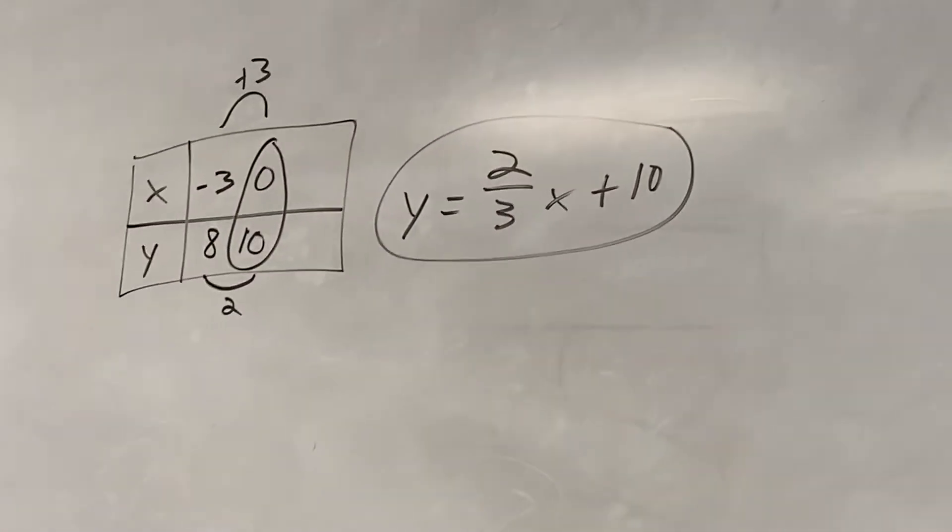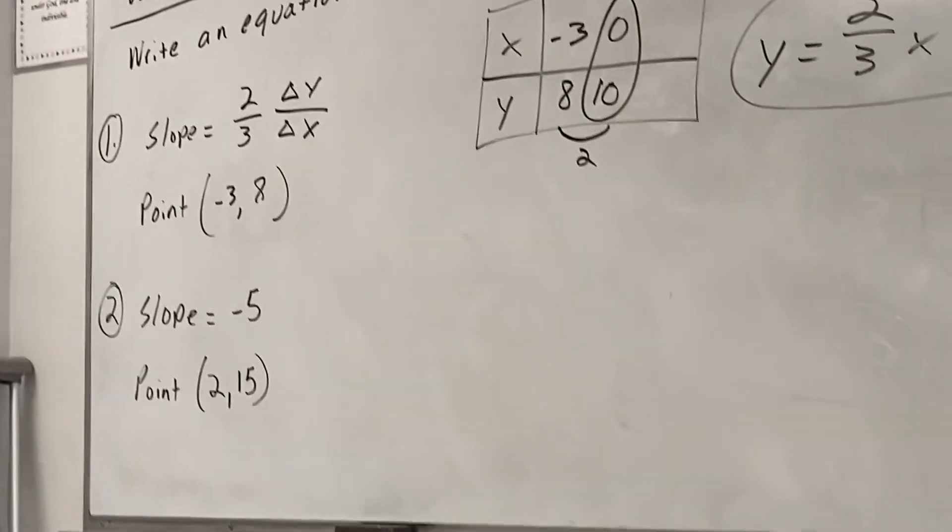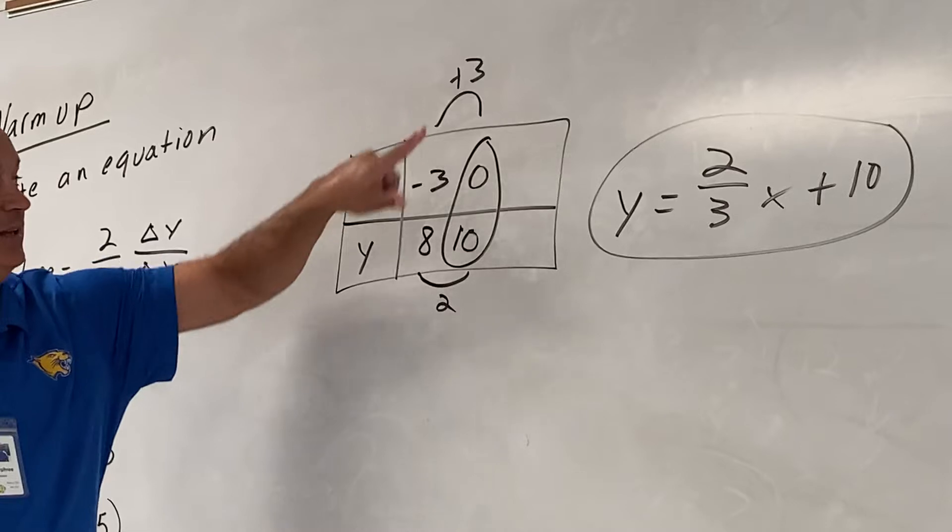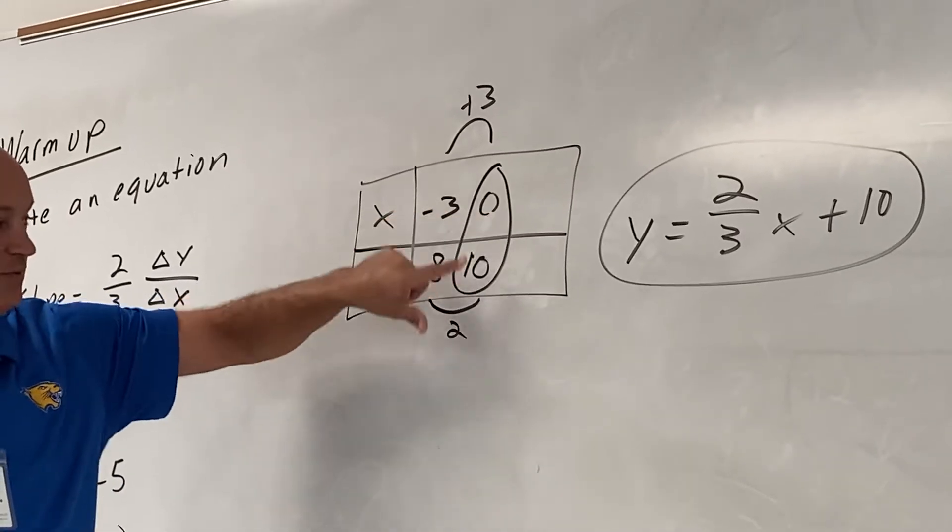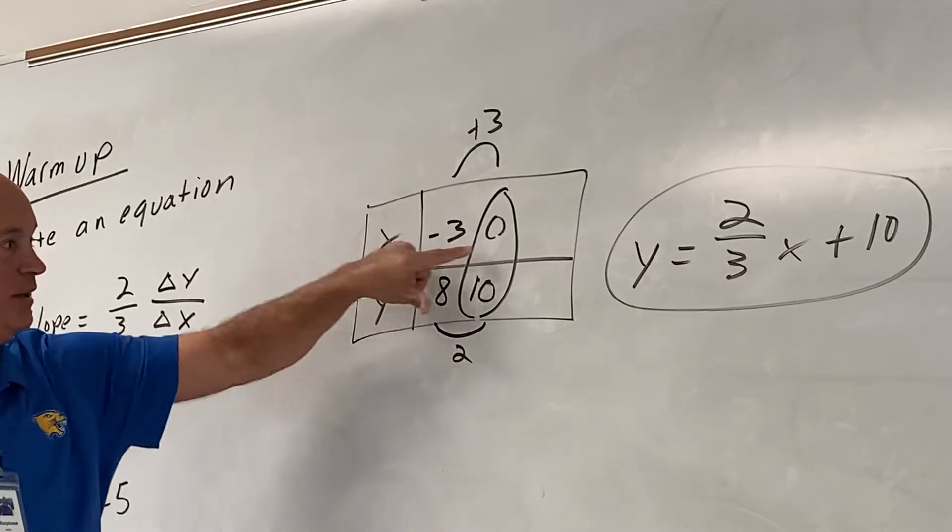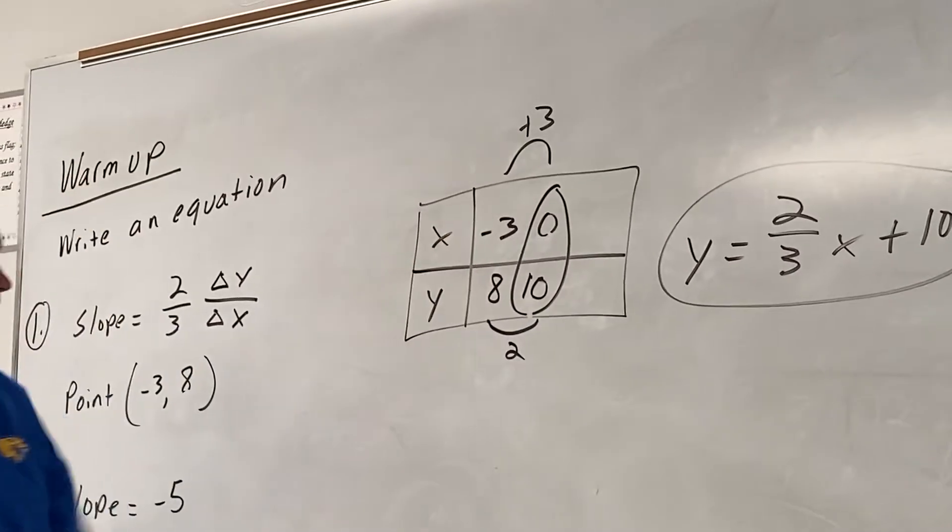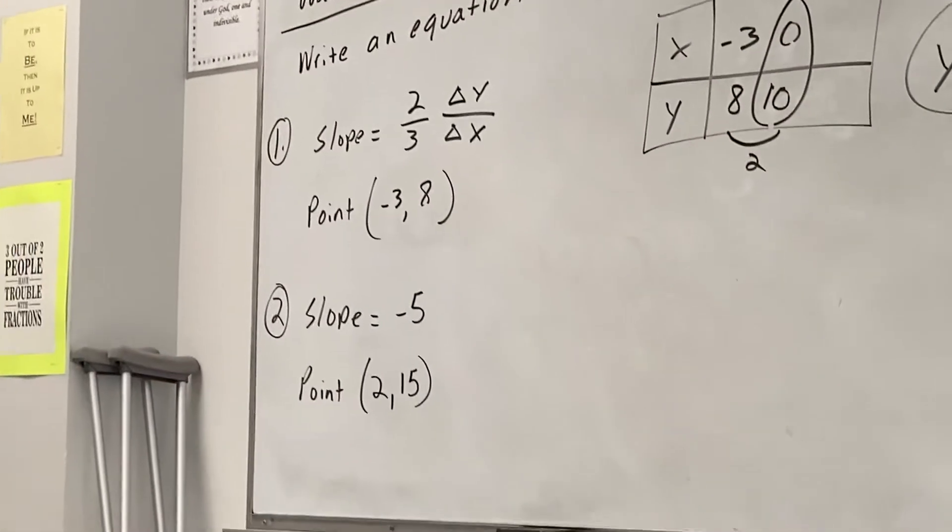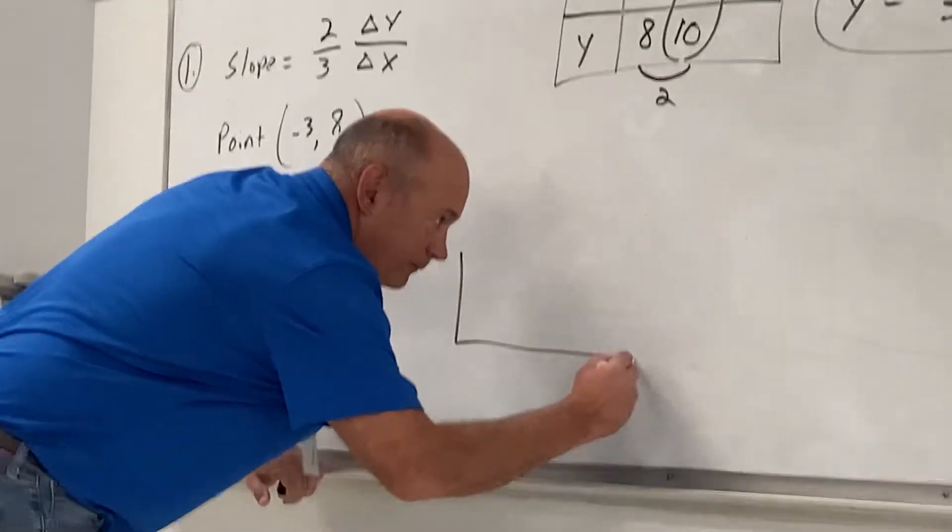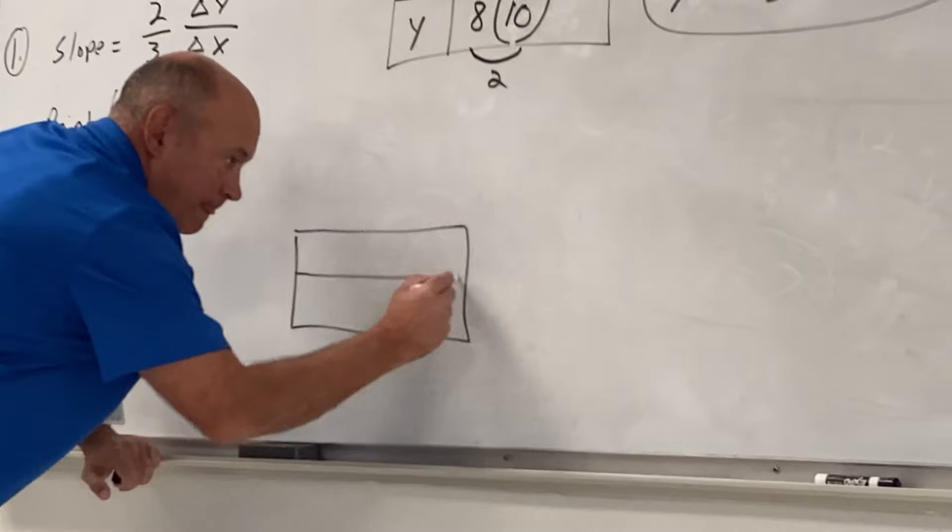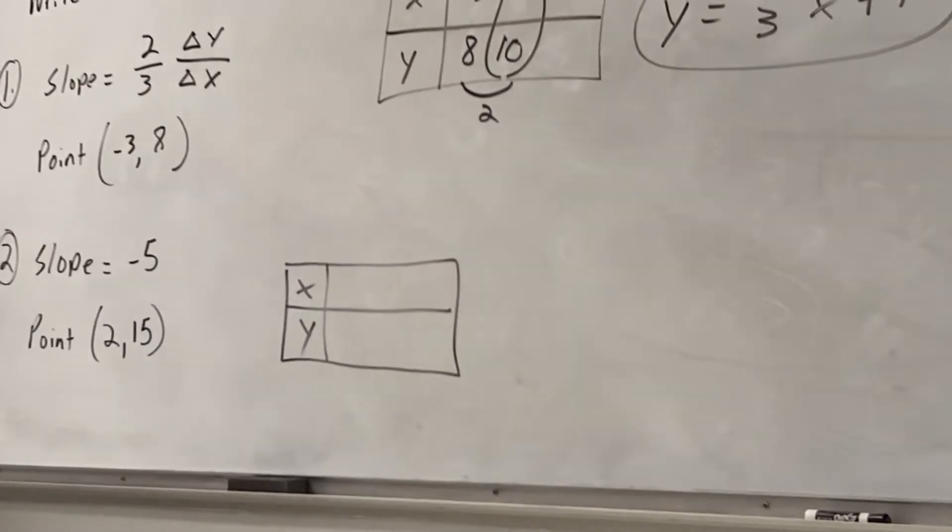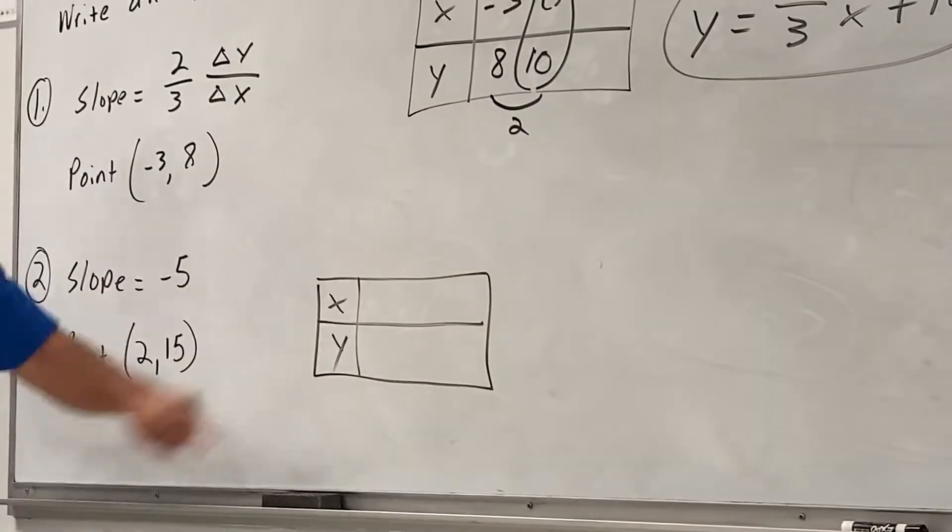Any questions on number 1? Once you did the slope one time, add 2 to 8, add 3 to negative 3, it gives you 0, 10. 0, 10 is the y-intercept. Remember, the y-intercept is where x equals 0. We're going to do the same thing on number 2. Let's make a table. Addison Jones, which number goes on top? 2. I agree with Addison.